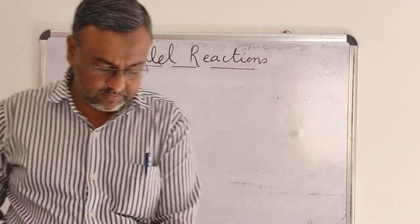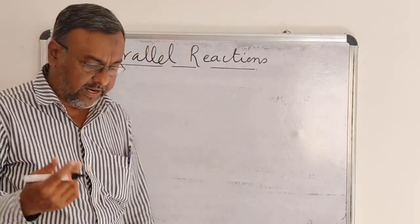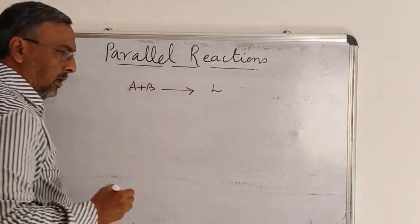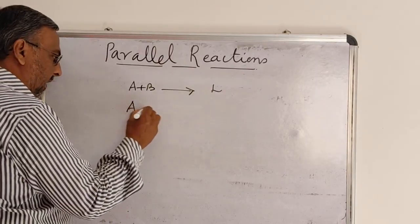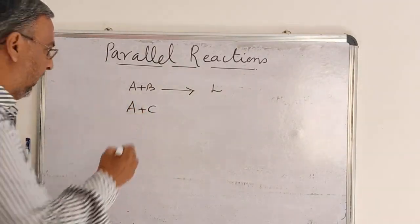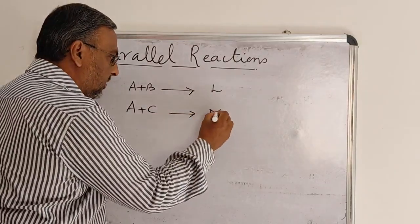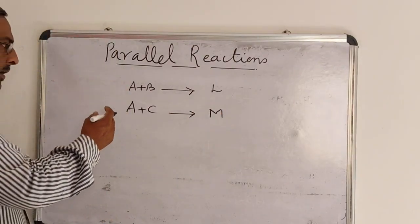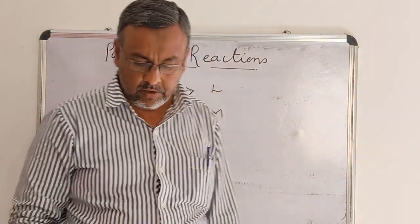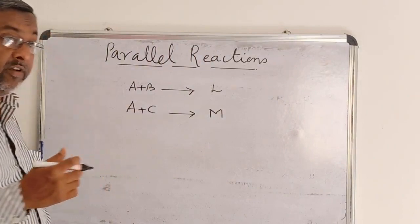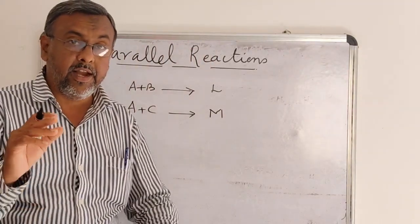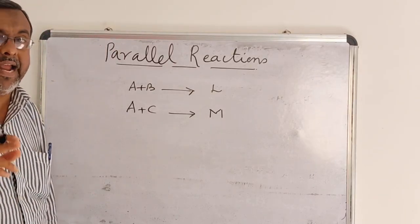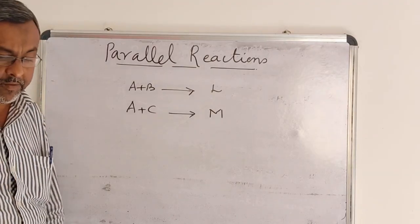Now let us discuss further. When the common reactant — for example, A plus B gives L in one reaction, and the same reactant A with another reactant C gives a different product — when the same reactant has a sufficiently low concentration, this type of parallel reaction occurs. Or, if the common reactant is present in large excess, then the rate of the reaction does not depend on the excess concentration. In that case also, parallel reactions occur but different pathways give different products.